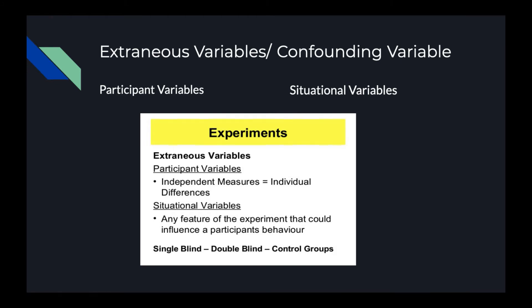In lab experiments it is much easier to control extraneous variables because many controls are available. In field experiments, aspects of the environment can lead to confounding variables, so cause and effect is more easily established in a lab experiment. We can be more certain that the independent variable is the only factor that caused changes in the dependent variable.